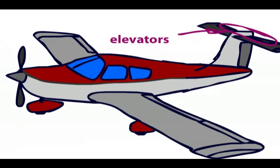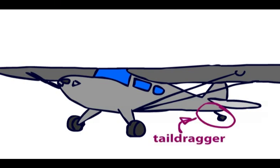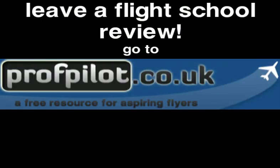This is an example of a tail-dragger aircraft. As you can see it rests on its tail as opposed to its nose. Hopefully this explains the fundamentals of an aircraft for you.